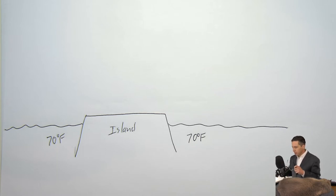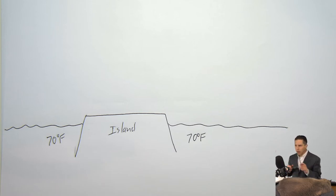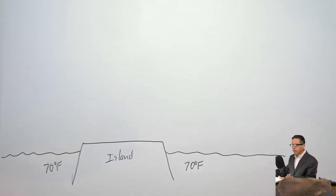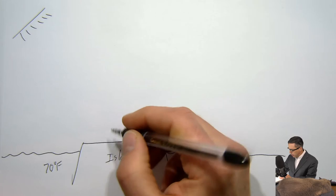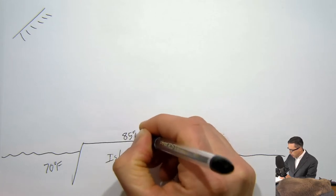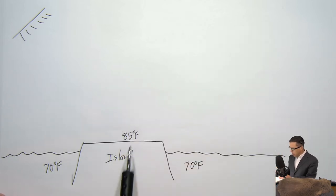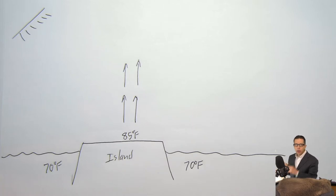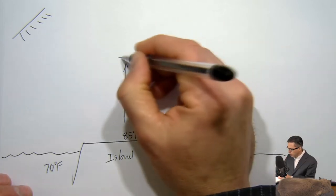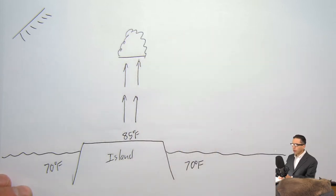Most places the ocean temperature is pretty much the same day and night — for this scenario the ocean is 70 degrees, both day and night. The island has a fairly low heat capacity, meaning its temperature will dramatically change from day to night. During the daytime, the sun comes out and warms the island — let's say it gets up to 85. The island is warmer than the surrounding water, so the air starts to rise, and we might get some convective cloud above it.